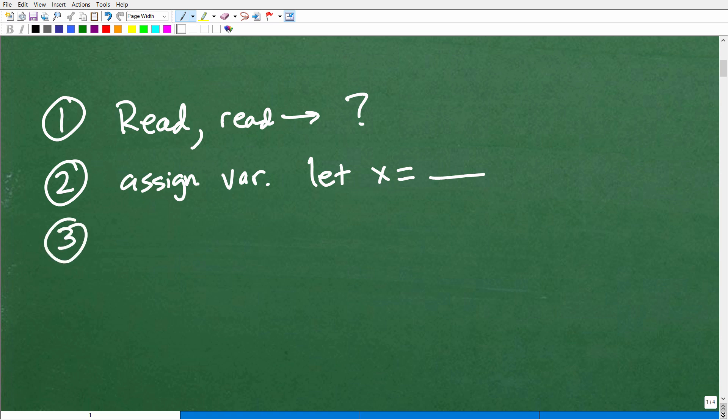Depending on the situation, you might have multiple variables involved, but you want to assign a variable. Now the third thing you want to do, and actually this can go with number two or number three, is to create a model or a sketch. This is also very helpful for especially geometry-related word problems. In this particular circumstance, we won't actually have a model, but keep this in mind. Try to make a model. Sometimes you can make the model first and then assign variables or vice versa. So this is very important.